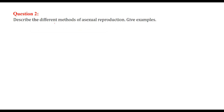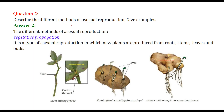Describe different methods of asexual reproduction with examples. Asexual reproduction means you don't require both male and female parts — either can do it individually. The first method is vegetative propagation, a type of asexual reproduction in which new plants are produced from buds, roots, or stems.